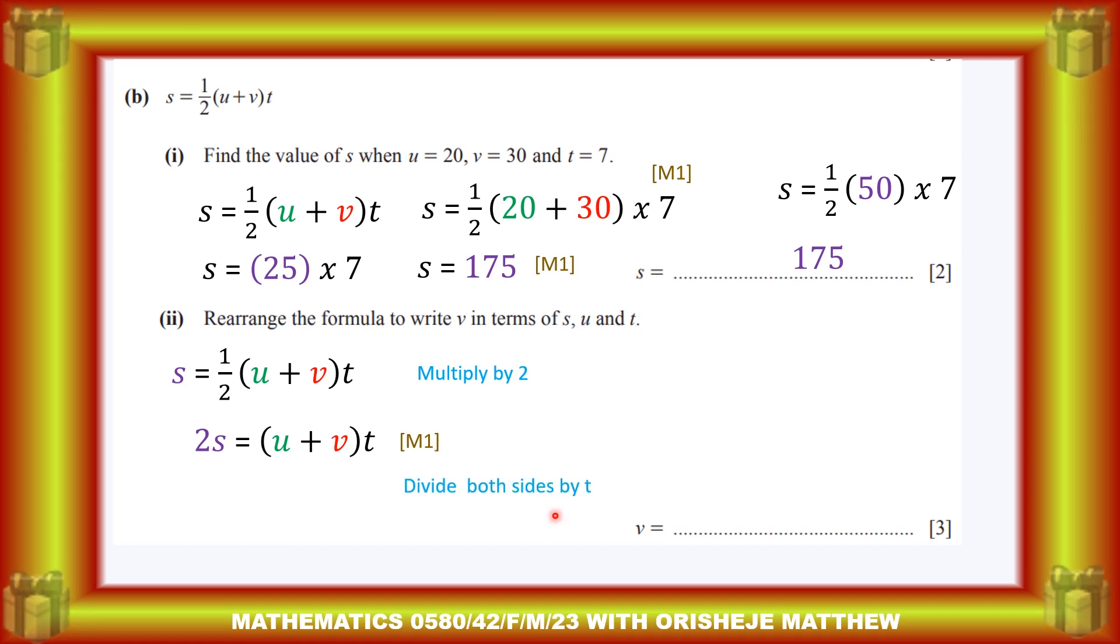Then next, divide both sides by t, so that will become 2s/t = u + v. You have another one mark. Then, to make v the subject of the formula, you subtract u from both sides, so that will become this value. That is the last one mark and that is the answer to this question.